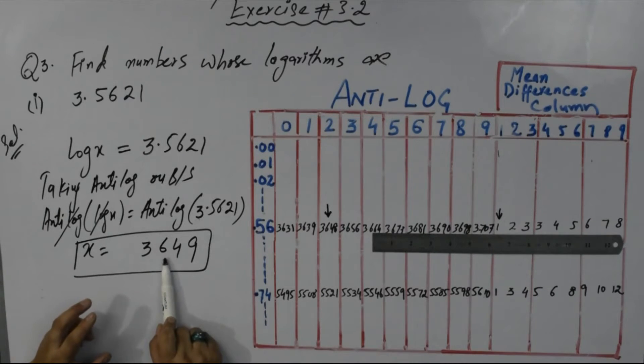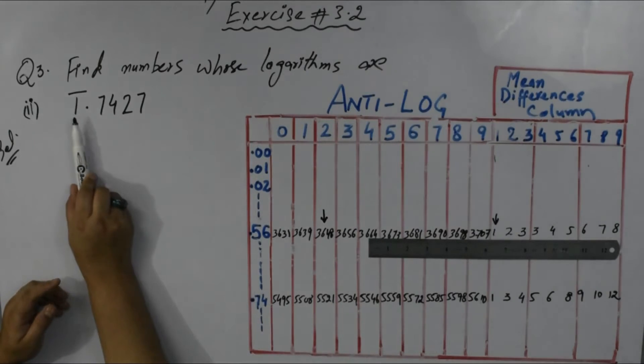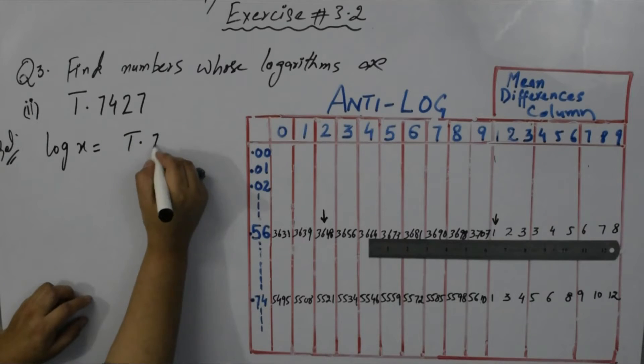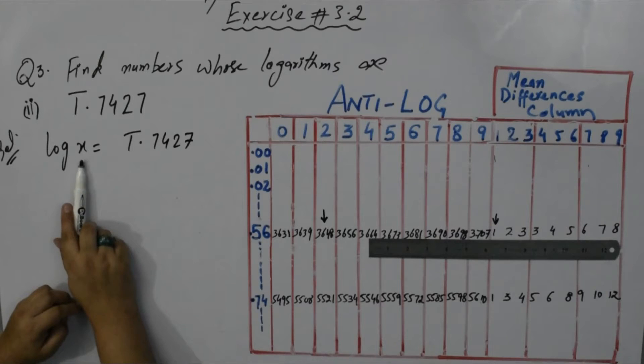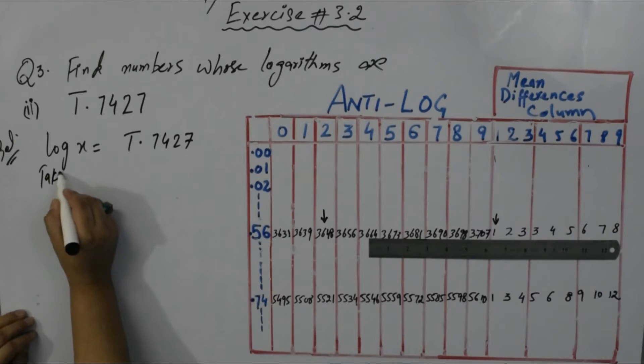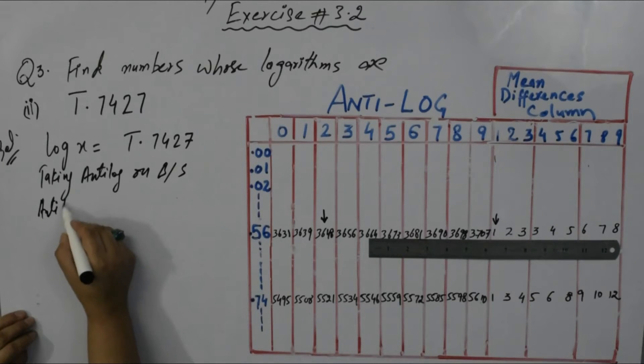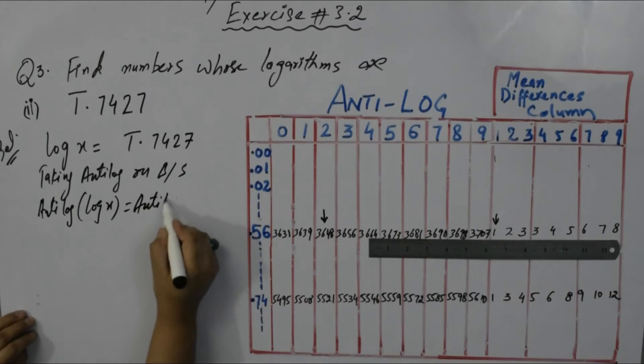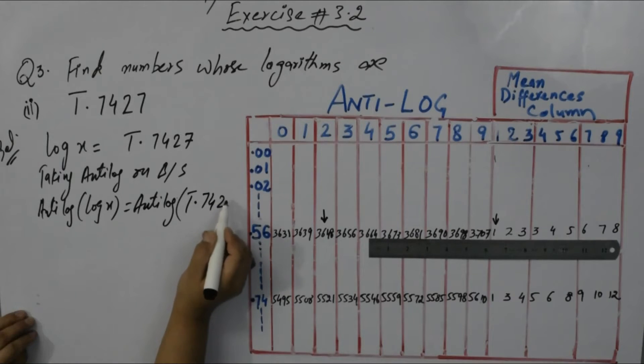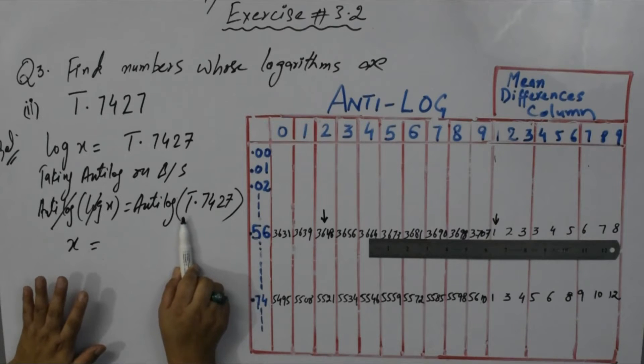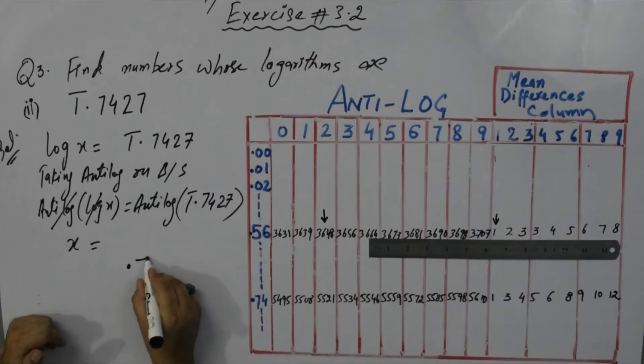Now second part is 1 bar negative 0.7427. In solution, log of x equals -0.7427. We have to calculate the number whose log is given. Same process, same steps: taking anti-log on both sides. Anti-log of log x equals anti-log of -0.7427.